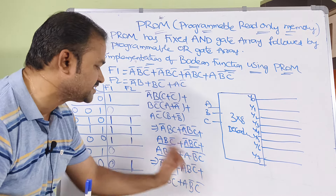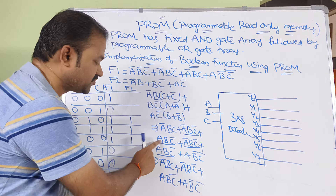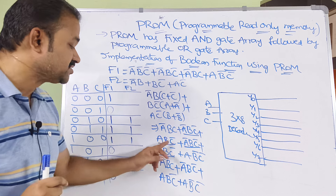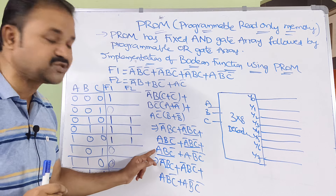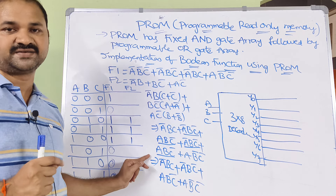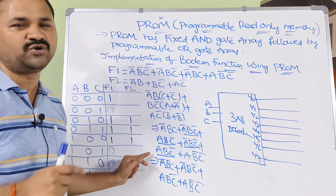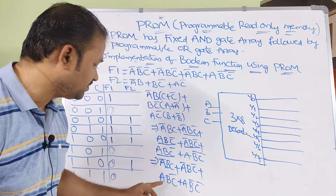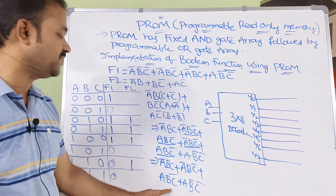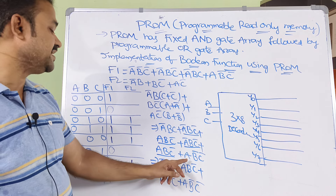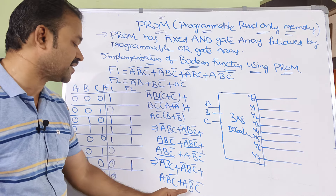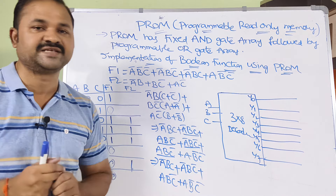Similarly, A B C bar appears twice — no need to write it twice. And A B bar C bar also appears. So the final standard form minterms for F2 are: A bar B C, A bar B C bar, A B C bar, and A B bar C bar.